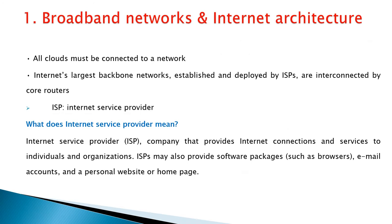The first enabling technology is broadband networks and internet architecture. In broadband networks, all clouds must be connected to the internet. The internet's largest backbone networks are established and deployed by ISPs — internet service providers. These internet service providers are interconnected by core routers.